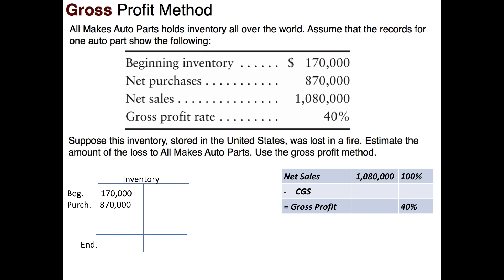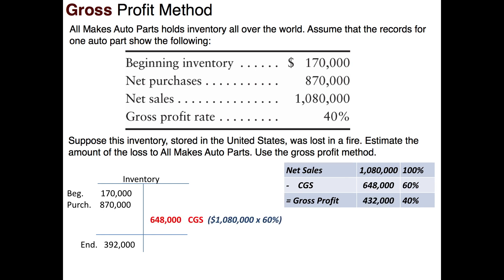Now that we know cost of goods sold is 60% of net sales, we do a simple multiplication: $1,080,000 times 60% gives cost of goods sold of $648,000. Subtracting that from the debit side of the inventory T account — $170,000 beginning inventory plus $870,000 in net purchases — gives us an estimated ending inventory of $392,000.